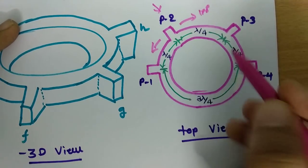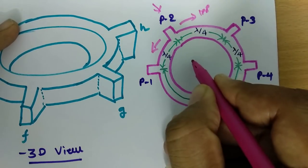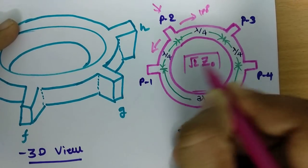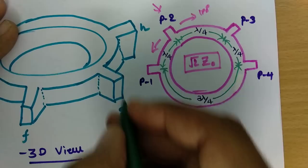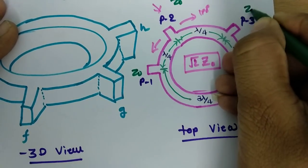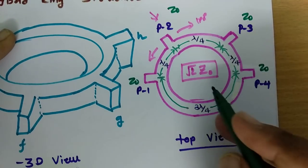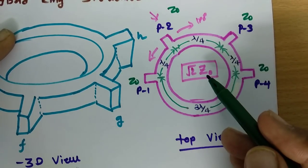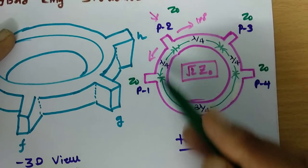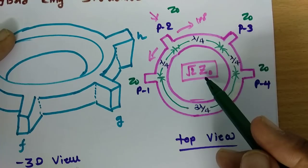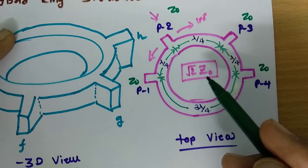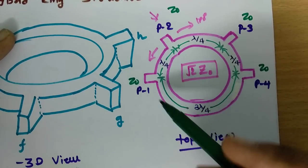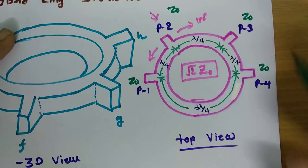Regarding the impedance of the hybrid ring: the impedance is realized as root-2 times Z0. At the port side, we need to match it with Z0 impedance. So if Z0 is 50 ohms, then the realized impedance through the hybrid ring will be root-2 times Z0, which is 50 times root-2, approximately 70.7 ohms (around 73 ohms). One needs to take care of this characteristic impedance and interface it with Z0 for impedance matching.